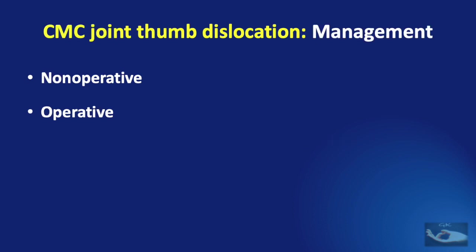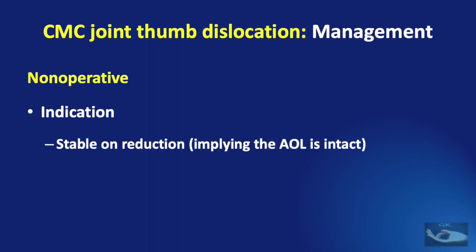The management of thumb carpometacarpal joint dislocations can be non-operative or operative. The indication for non-operative management is if the carpometacarpal joint is stable on reduction, which implies that the anterior oblique ligament is intact.